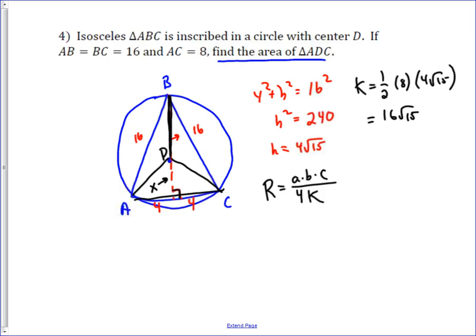And so, we're going to get R equals A times B times C, 8 times 16 times 16 over 4 times 16 root 15. One of the 16s cancel, the 8 and the 4 cancel to 2.